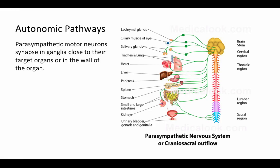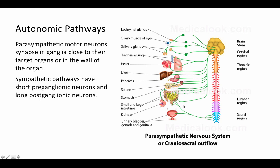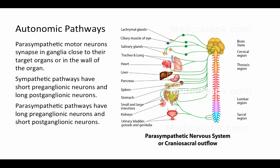For the parasympathetic pathways, the parasympathetic motor neurons synapse in ganglia that are either very close to their target organs or in the wall of those target organs themselves. Parasympathetic motor neurons come mostly from the sacral region and also from cranial nerves — this is often called craniosacral outflow. Because of this, sympathetic pathways have very short preganglionic neurons and very long postganglionic neurons, while parasympathetic pathways have the opposite: very long preganglionic neurons and very short postganglionic neurons right in or near the organ.